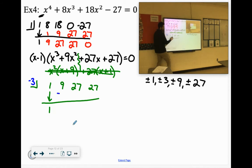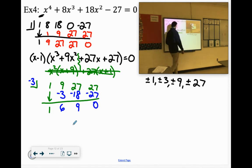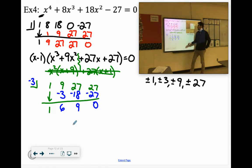Negative 3 times 1 is negative 3. 9 minus 3 is 6. Negative 3 times 6 is negative 18. 27 minus 18 is 9. Negative 3 times 9 is negative 27, which gives us the 0. So negative 3 is another one of our factors, one of our 0s.